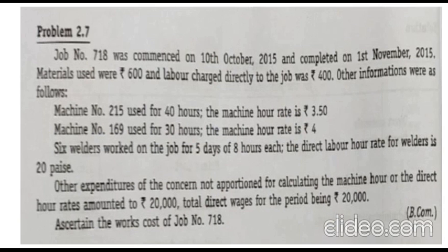The next problem is Problem 2.7. Job number 718 was commenced on 10th October 2015 and completed on 1st November 2015. Materials used were 600 rupees and labor charges directly to the job were 400 rupees. Other information: machine number 215 used for 40 hours at machine hour rate of 3.50 rupees; machine number 169 used for 30 hours at machine hour rate of 4 rupees.